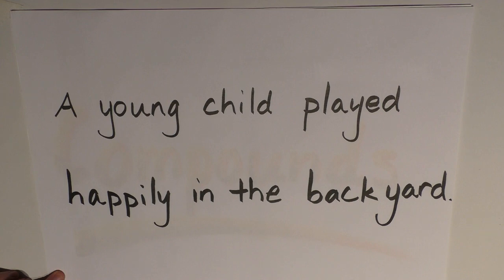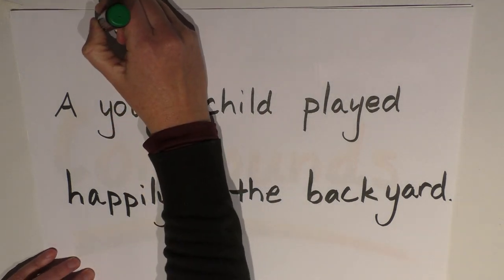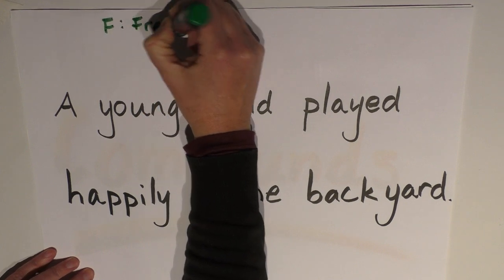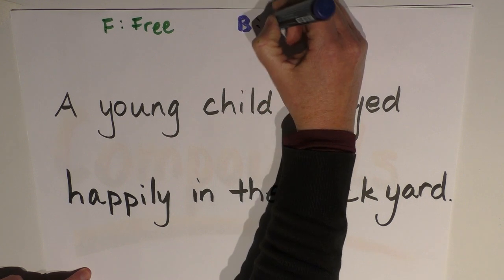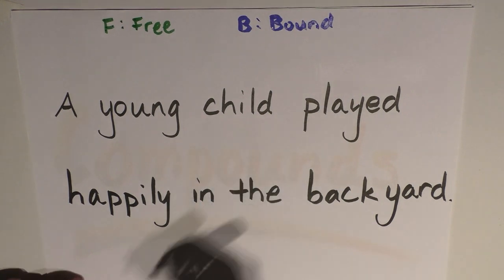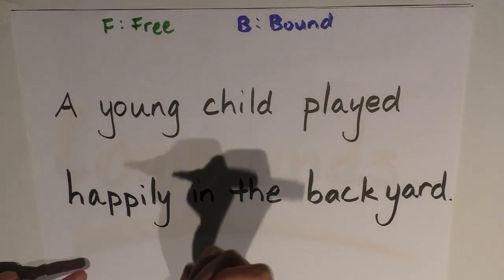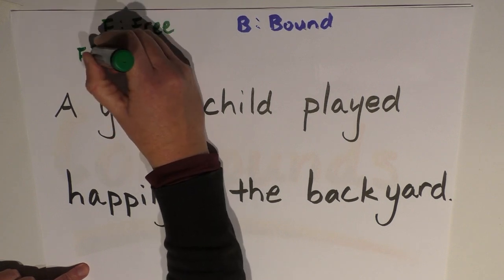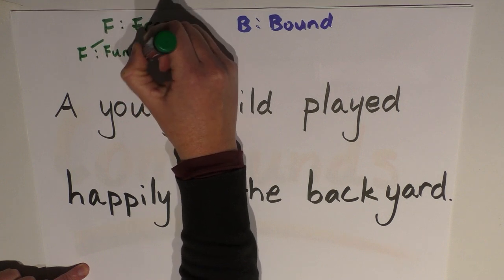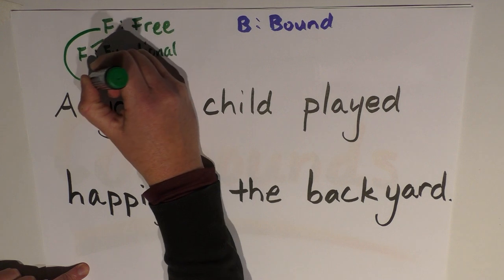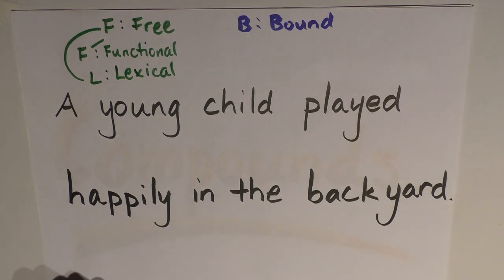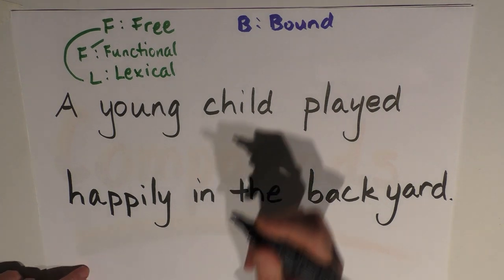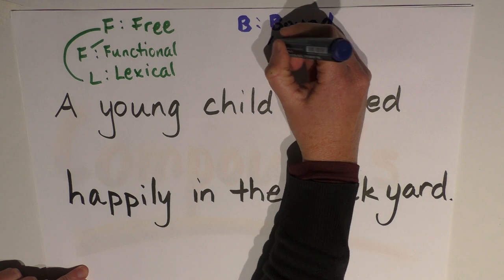I'll use a green pen to represent free morphemes — so 'F' for free morphemes — and blue for bound morphemes, so 'B' for bound morphemes. After dividing into free and bound, I'm going to further divide into functional — 'FF' for free functional — and 'FL' for free lexical. With the bound morphemes I'll use 'I' for inflectional and 'D' for derivational.